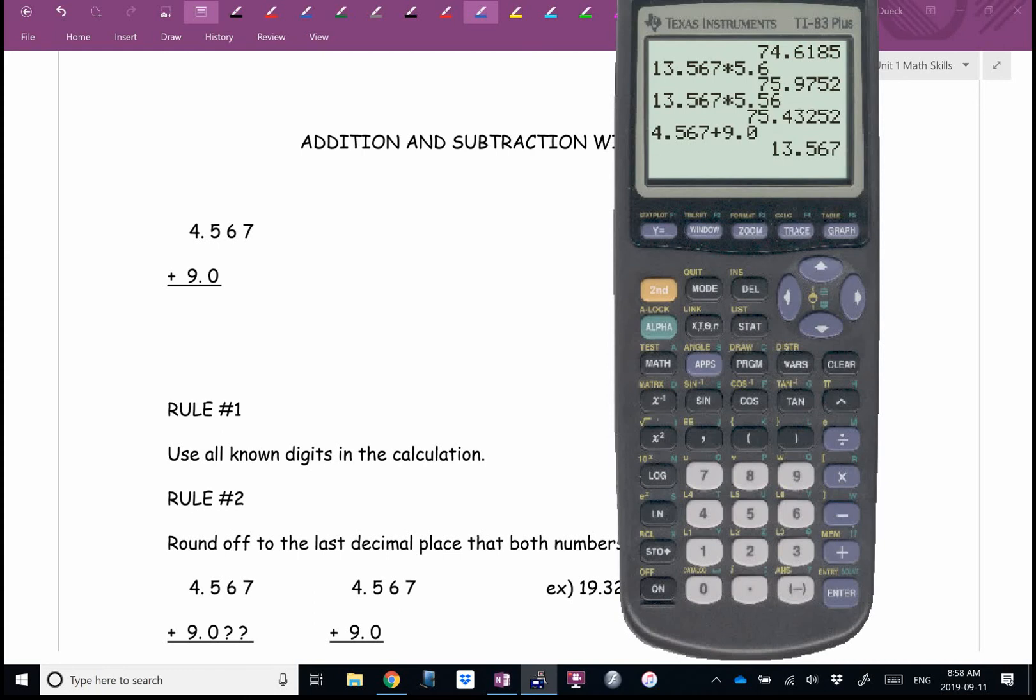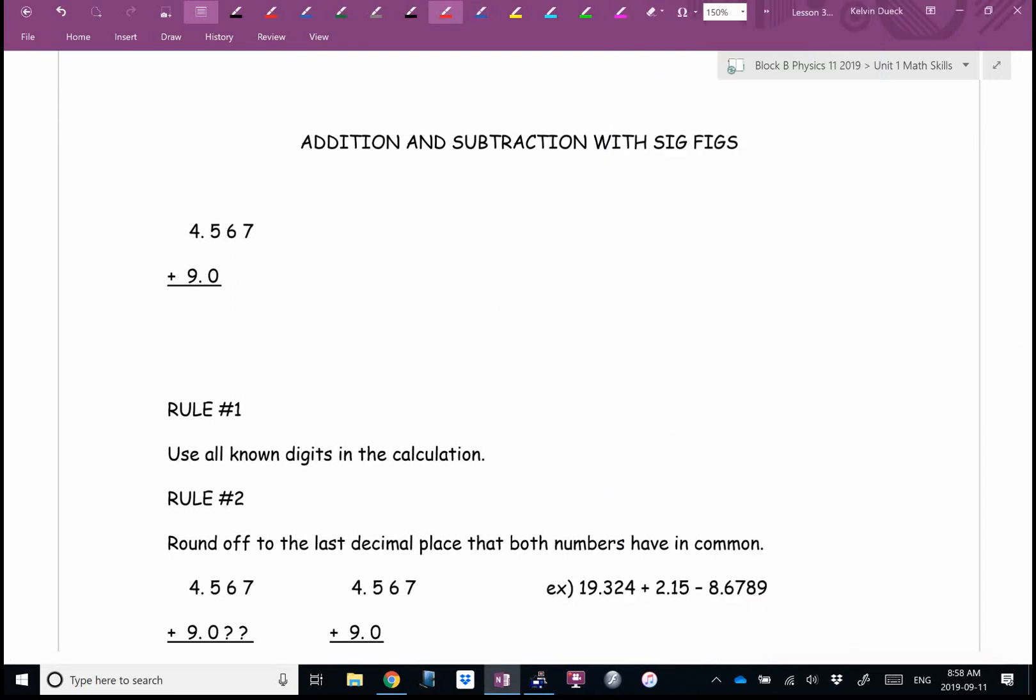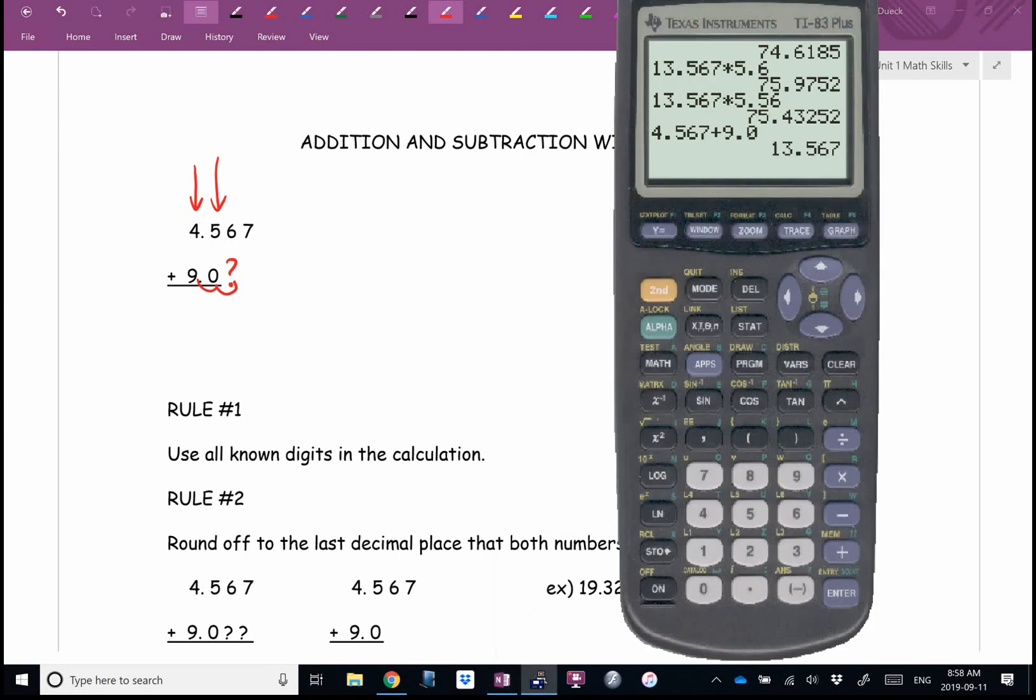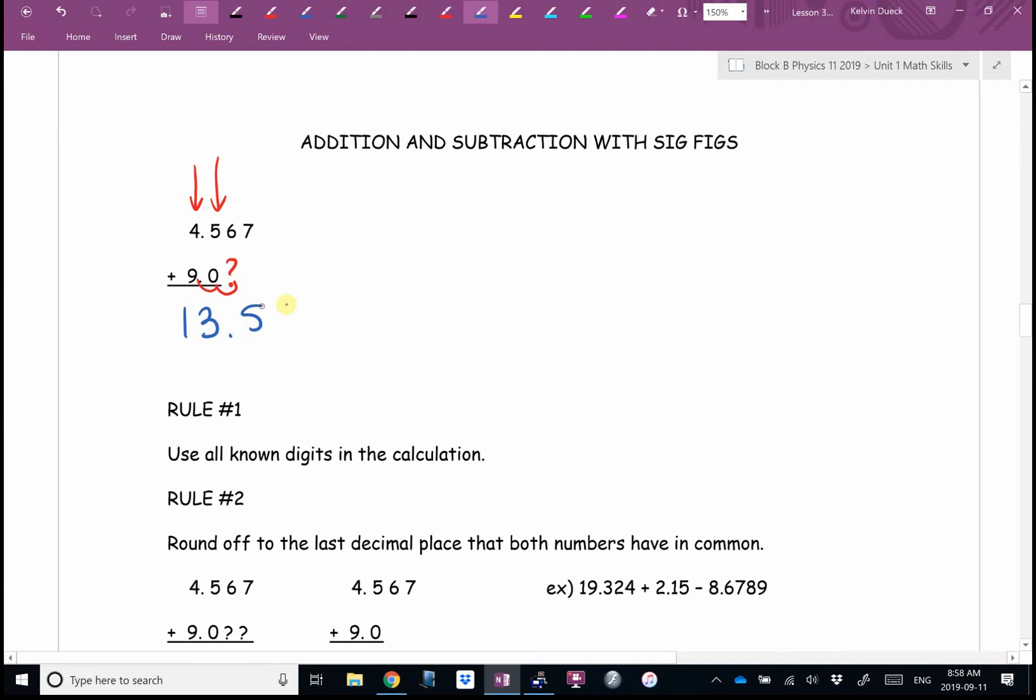I get 4.567 plus 9.0, which gives 13.567. The rule for adding and subtracting: you do not count sig figs. Instead, notice: I know both numbers in that column, I know both numbers in that column, but here I don't know what number is there. That is the second decimal place. I'm going to round to the second decimal place. The second decimal place is the 6. Is the 6 going to stay a 6 or become a 7? Bigger than 5.